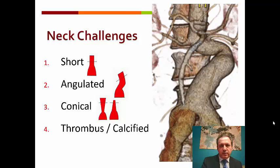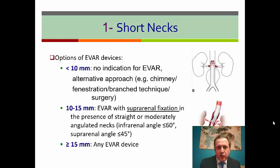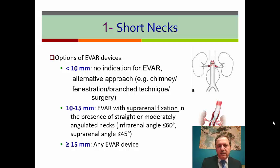Let's start with the short neck. If the neck is less than 10 mm, we cannot use any commercial EVAR and we have to use an alternative approach like chimney, FEVAR, or PVAR. If the neck is between 10 to 15 mm, it's better to use EVAR with suprarenal fixation. If the neck length is more than 15 mm, you can use any EVAR available on the market.